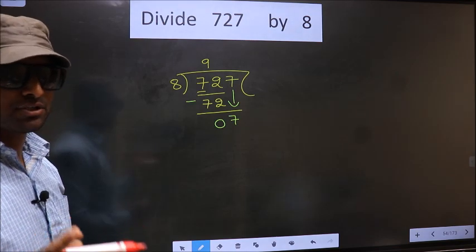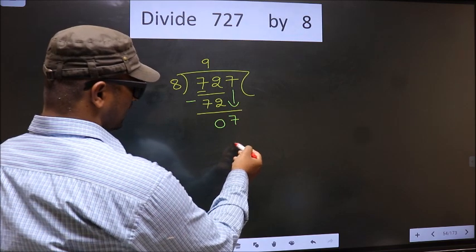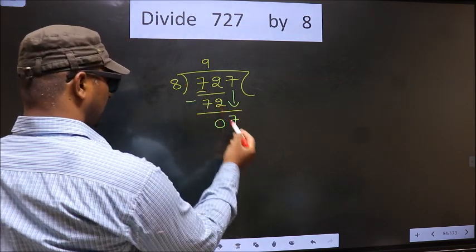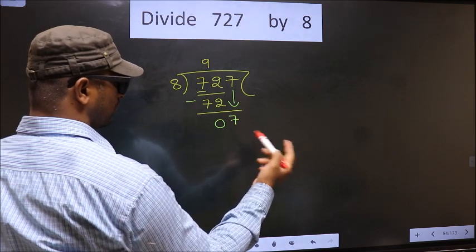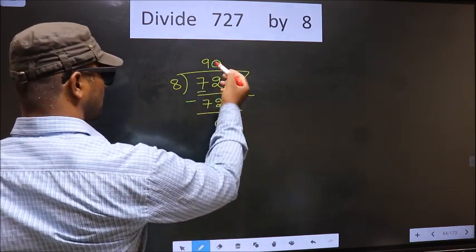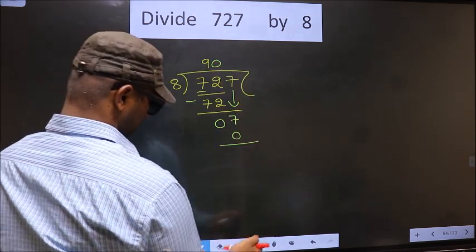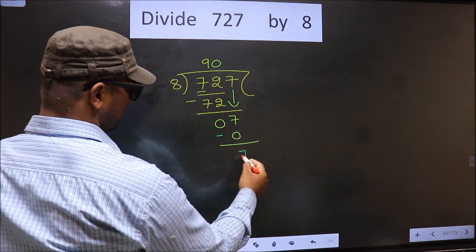Instead, what you should think of is, what number should we write here. If we write 8 here, that is larger than 7. So what we do is we take 0 here. So 8 into 0, 0. Now you subtract. 7 minus 0, 7.